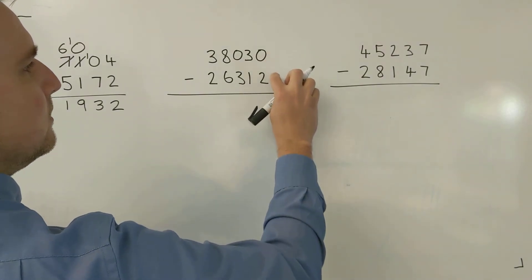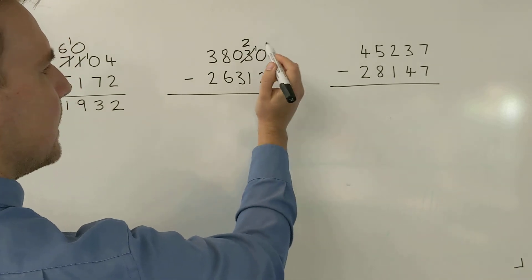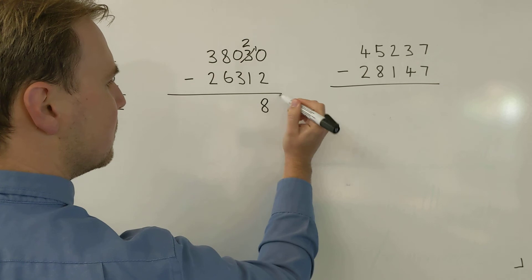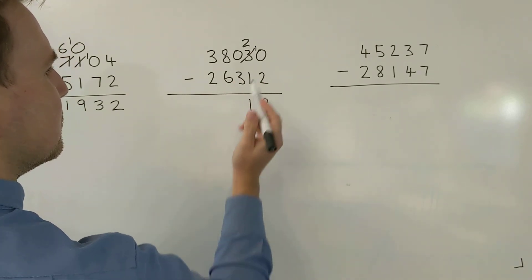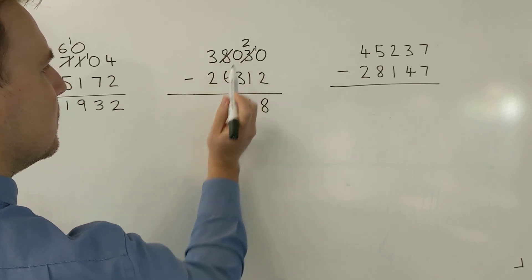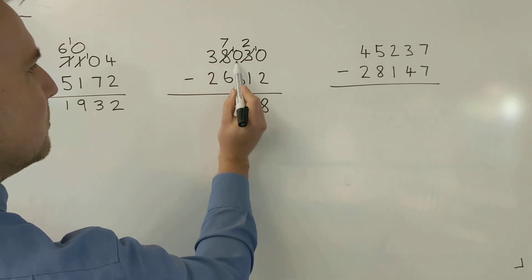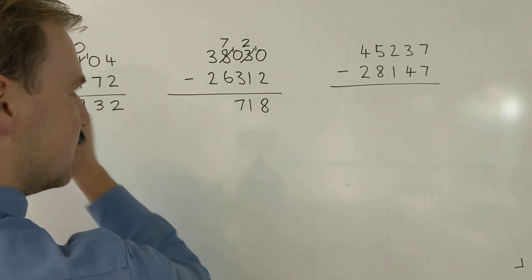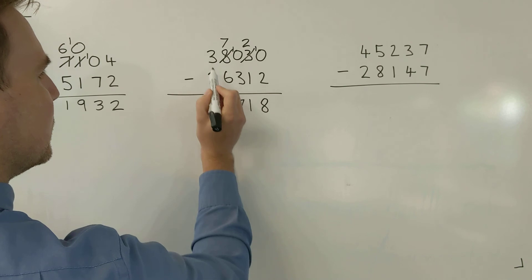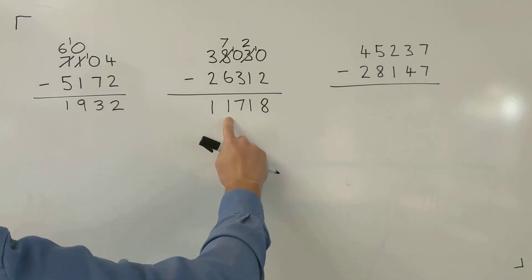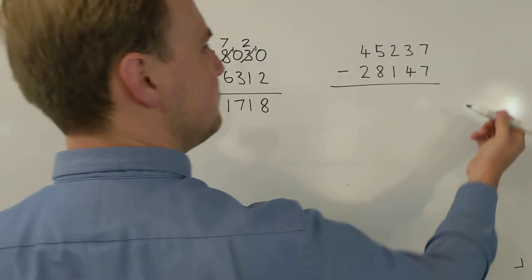Next one: 0 take away 2 — can't do it, let's trade. That becomes a 2, that becomes a 2, the one comes down. Now 10 take away 2 leaves us with 8. 2 take away 1 is 1. 0 take away 3 — can't do it, need to trade. I'll go to the next column and bring it down — that becomes 7, I bring the one down. Now 10 take away 3 is 7. Thousands column: 7 take away 6 is 1. Ten-thousands: 3 take away 2 is 1. Answer: 11,718.